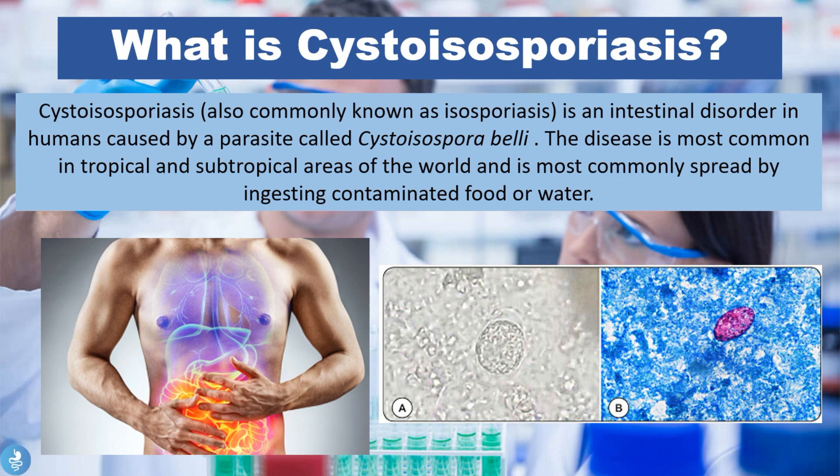Cystoisosporiasis, also commonly known as isosporiasis, is an intestinal disorder in humans which is caused by a parasite called Cystoisospora belli. The disease is most common in tropical and subtropical areas of the world and is most commonly spread by ingesting contaminated food or water.